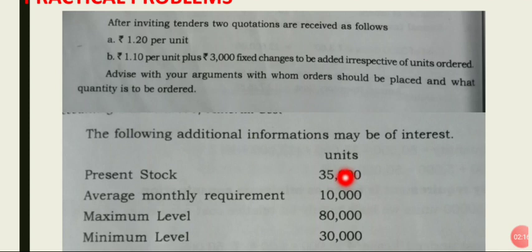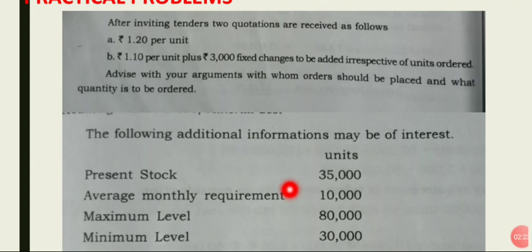The given information: Present stock is 36 units. Monthly average consumption is 10,000. Maximum level is 80,000. Minimum level is 30,000.